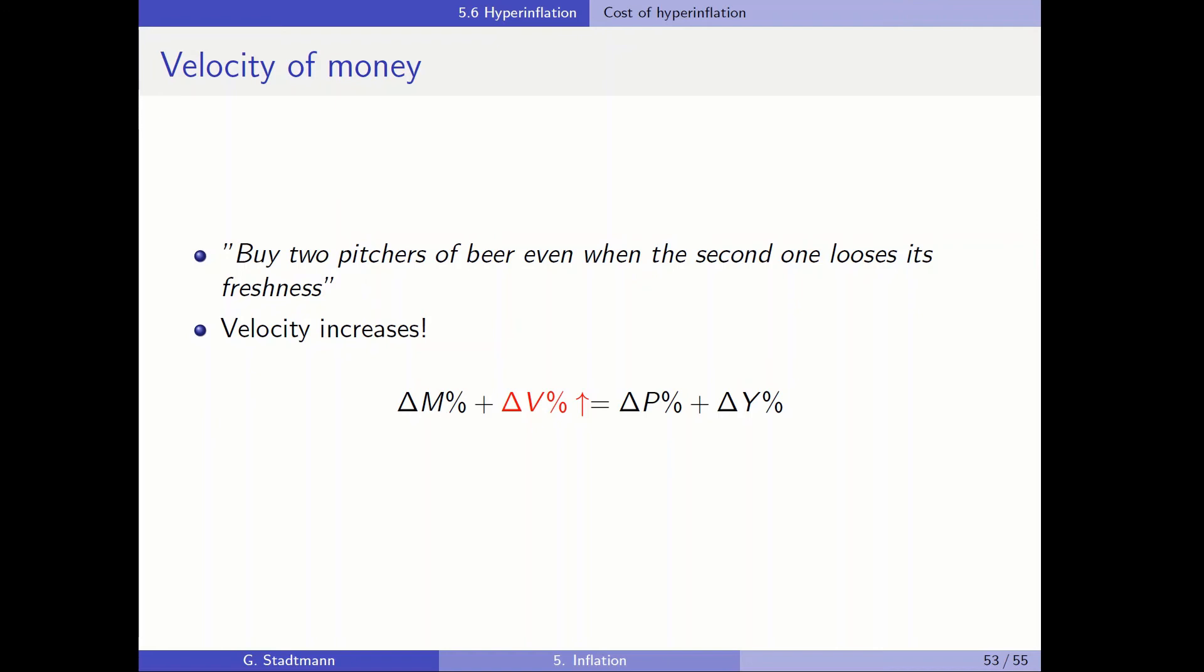When some private households were entering a bar, it was the case that these households were buying two pitchers of beer even when the second one loses the freshness. So directly the private people ordered two pitchers of beer because after the first pitcher would be finished, the prices would have increased. How will the owner of the bar react when the money goes from the pockets of the private household into the pockets of the bar owner? The owner of the bar will directly send somebody out to buy more beer. Nobody wants to hold money in this situation because the prices are increasing so fast. So the velocity of money increases. And we can also check how that affects prices. When velocity increases, prices will increase.